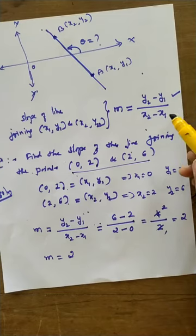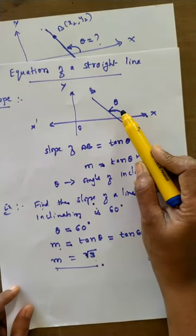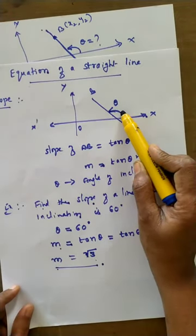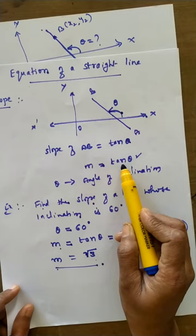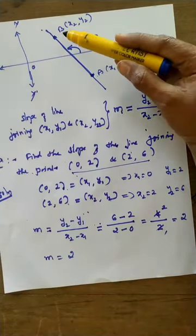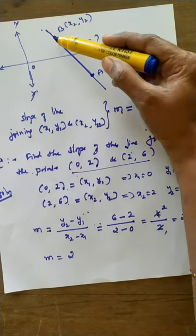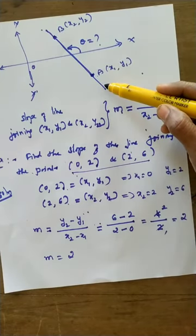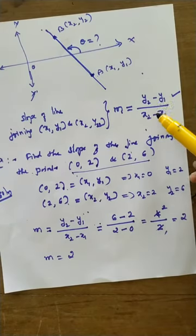So we know two formulas. First: whenever the angle of inclination — the angle made by the straight line — is given, use M = tan θ to find the slope. Second: whenever the line-joining points are given, use M = (y2 − y1) / (x2 − x1).